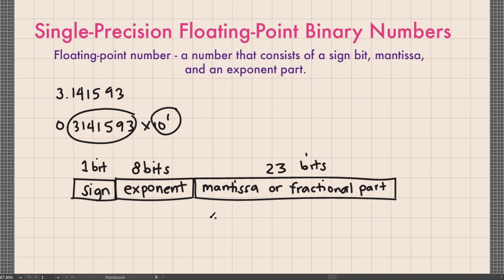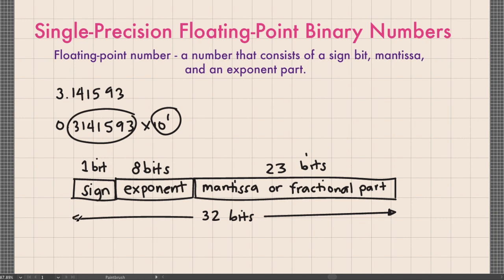All in all, we have 32 bits. When the floating point number is represented by 32 bits, this is called a single precision floating point binary number. If it is represented by 64 bits, then we have a double precision floating point binary number.